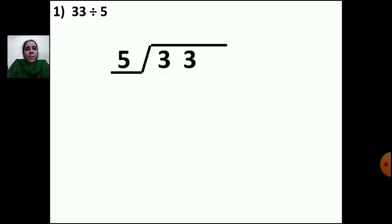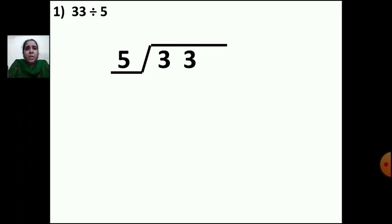The first question is 33 divided by 5. You can see the divide sign. You have to write the divide sign and then do the sum. Which is the dividend here? 33 — that will come inside. Which is the divisor? 5. So 5 you will write outside and 33 will be inside.